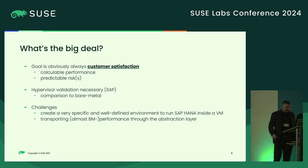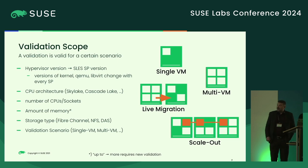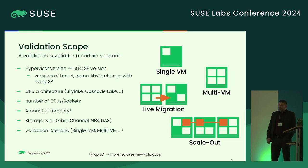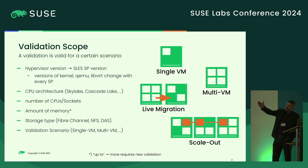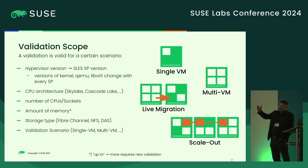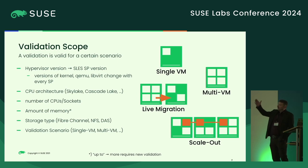The challenges involved are to create a very specific and well-defined environment to run SAP HANA inside the VM and, as already said, transporting almost bare metal performance through the abstraction layer. The validation scope: if we do a validation, it's bound to the hypervisor version — in our case also the SLES SP version — the CPU architecture, number of CPU sockets, amount of memory, storage type, and the validation scenario.